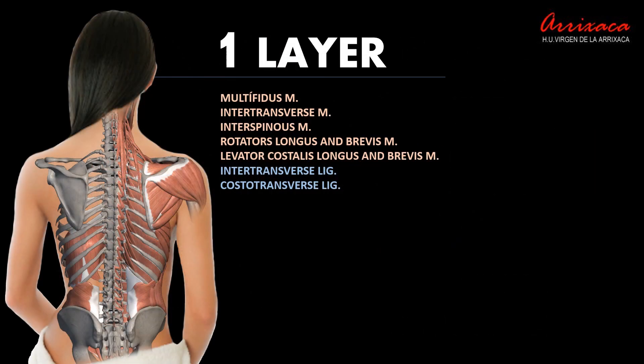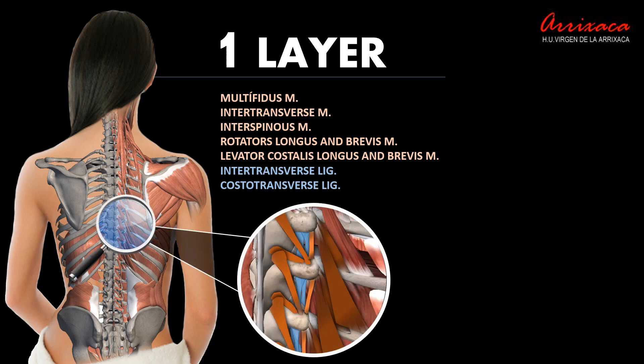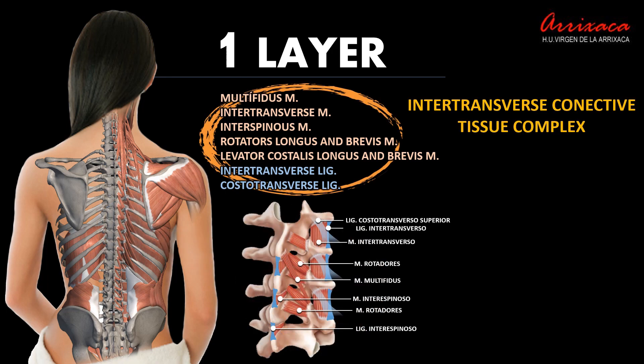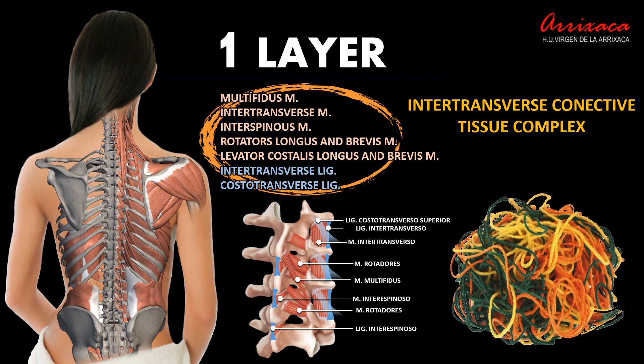In the posterior thoracic wall, if we perform a virtual dissection starting from the deepest part of this paraspinal space, we will find a group of muscular filaments and ligamentous structures classically called the intertransverse connective tissue complex: multifidus, intertransversus, interspinus, longus and brevis rotators, and costal elevators. These ligaments confer stability to the vertebral-costal junction.